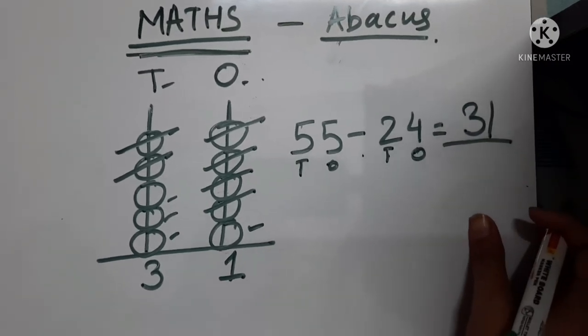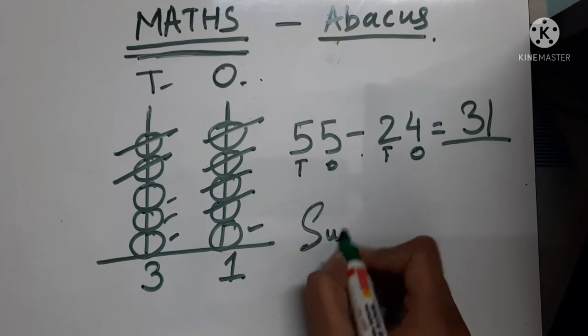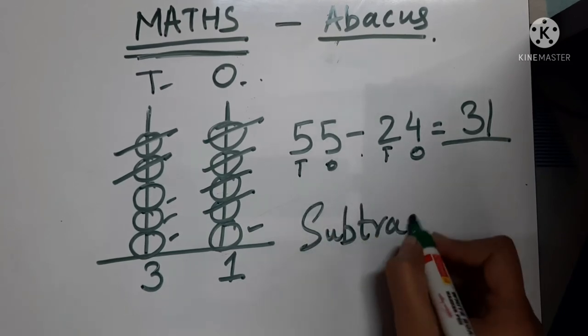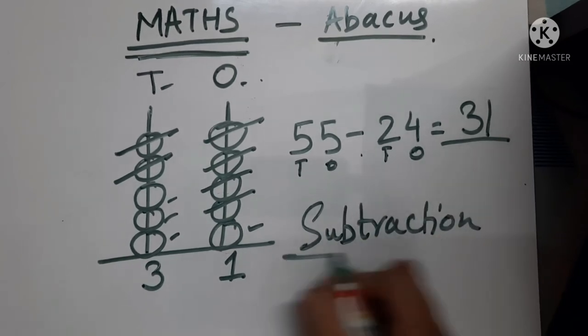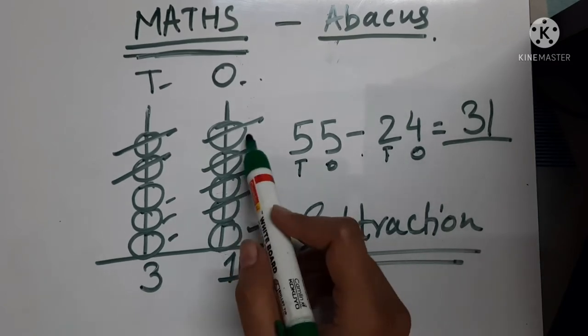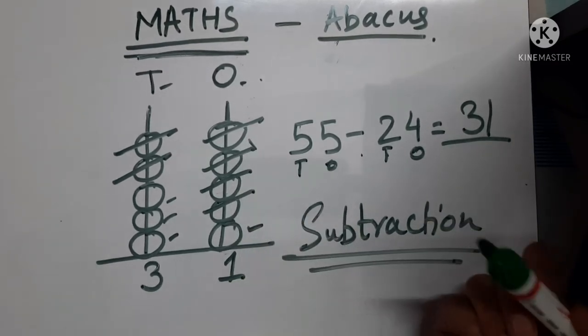So, in this way, you have to subtract. Subtraction using an abacus. In subtraction, you have to cut, remove or decrease the beads.